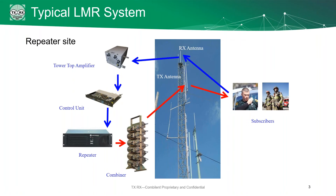This is your typical land mobile radio system. You start off and end with your subscribers. Those are usually some sort of public safety, or they might be workers at a factory or warehouse facility. These are people out in the real world with handheld radios. They talk up to the RX antenna on your tower, which passes the information to a tower top amplifier. That amplifier pushes the signal back down to the control unit, and finally to your radio at the equipment shed. Today, though, we're going to be focusing on the section in blue — subscribers back to your radio.